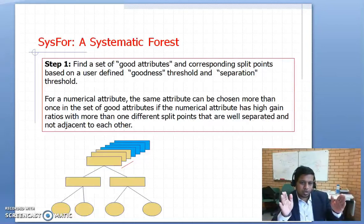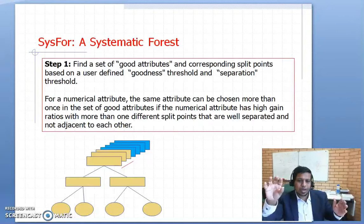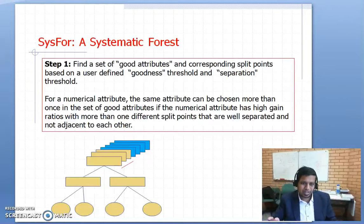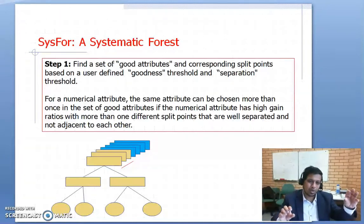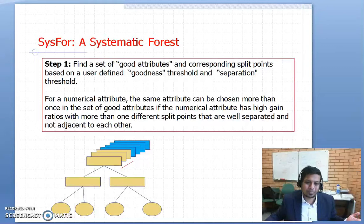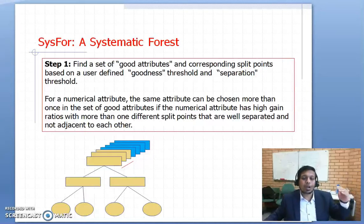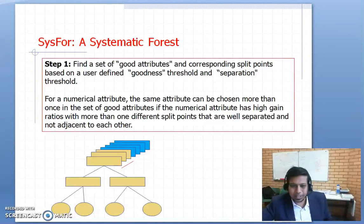It then builds the second tree by picking the second-best attribute from the list, the third tree using the third-best attribute, and so on. These attributes are only selected at the root node — the very first node of the tree — and the following nodes are picked as usual.